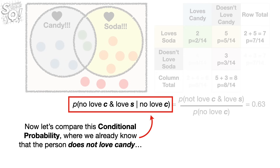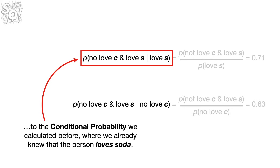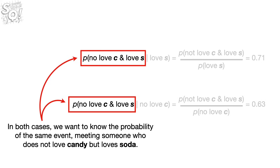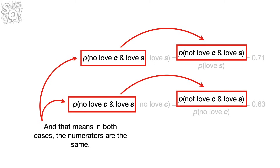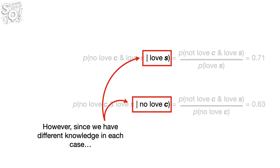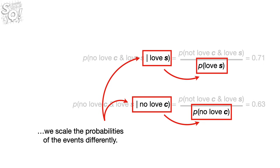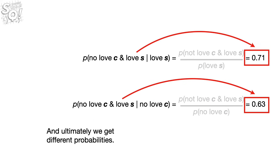Now let's compare this conditional probability, where we already know that the person does not love candy, to the conditional probability we calculated before, where we already knew that the person loves soda. In both cases, we want to know the probability of the same event — meeting someone who does not love candy but loves soda — and that means in both cases the numerators are the same. However, since we have different knowledge in each case, we scale the probabilities of the events differently, and ultimately we get different probabilities.